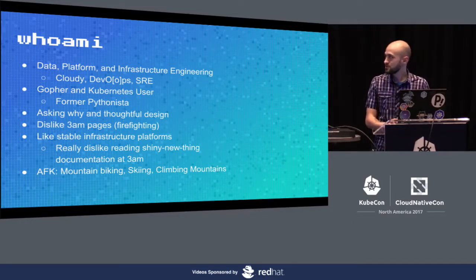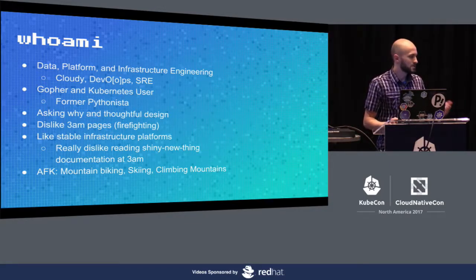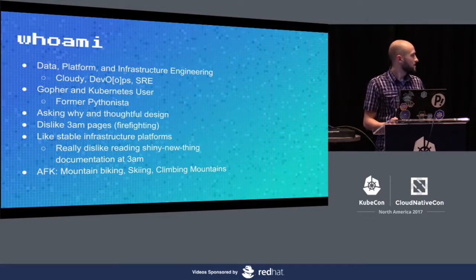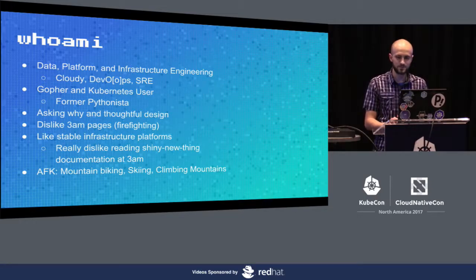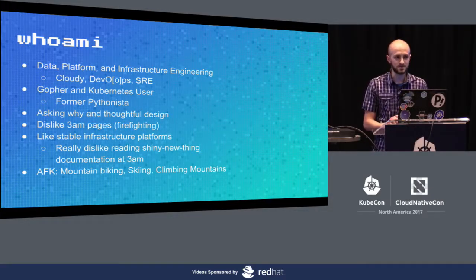Who am I? My name's Josh Ropo. I've been doing data engineering and platform infrastructure engineering for most of my career, about six years. I'm a gopher and I really like Kubernetes. I'm definitely a user — I haven't contributed to core, and I haven't really had the time to dive super deep, but I'm trying to stay up on the trends. I like asking why and doing thoughtful system design. I don't like being woken up at three in the morning when Elasticsearch goes down, and I like stable infrastructure platforms, which is primarily why I was so interested in Kubernetes.